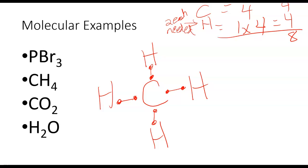So the octets are satisfied and we only have 1, 2, 3, 4, 5, 6, 7, 8 electrons.